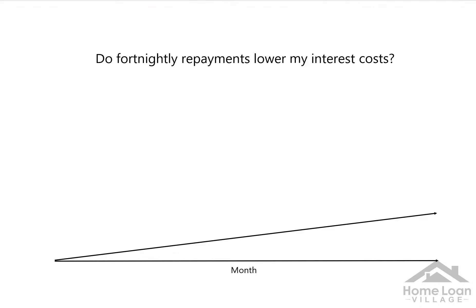What I've got here is a very simple diagram of a month, and the top line is the debt accumulating over that month. Now, how that actually happens in practice is basically day by day, every day, interest compounds.